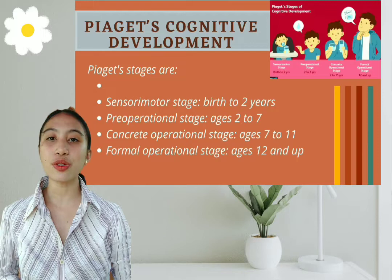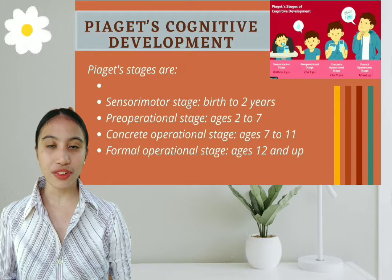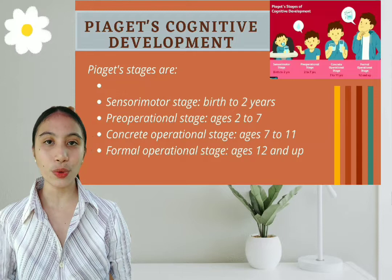Piaget's stages are: the sensorimotor stage, birth to 2 years old; the pre-operational stage, ages 2 to 7 years old; the concrete operational stage, ages 7 to 11 years old; and the formal operational stage, ages 12 and up.